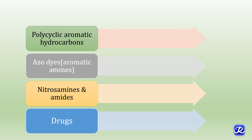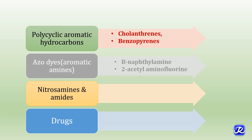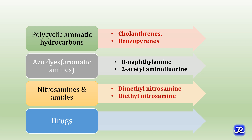Polycyclic aromatic hydrocarbons like chloranthrin and benzopyrene, aromatic amines like beta-naphthalamine and 2-acetylaminofluorine, nitrosamines and amides like dimethyl nitrosamine and diethyl nitrosamine, and drugs like cyclophosphamide, busulfan and diethylstilbestrol are also important chemical carcinogens.